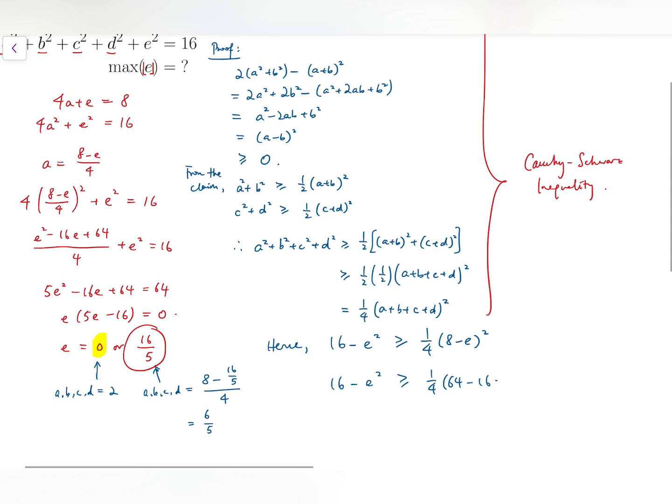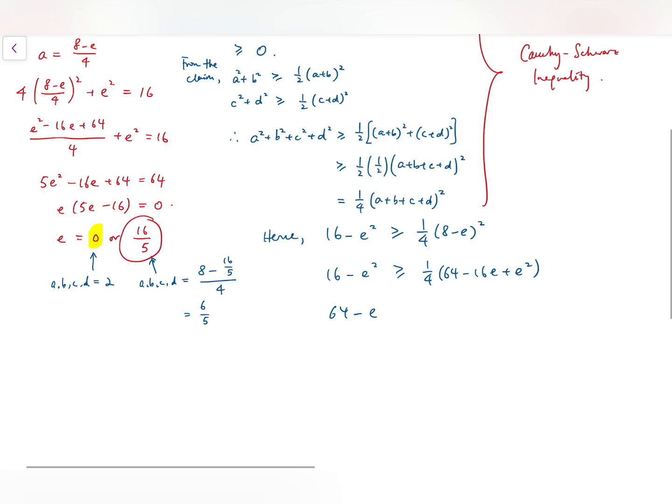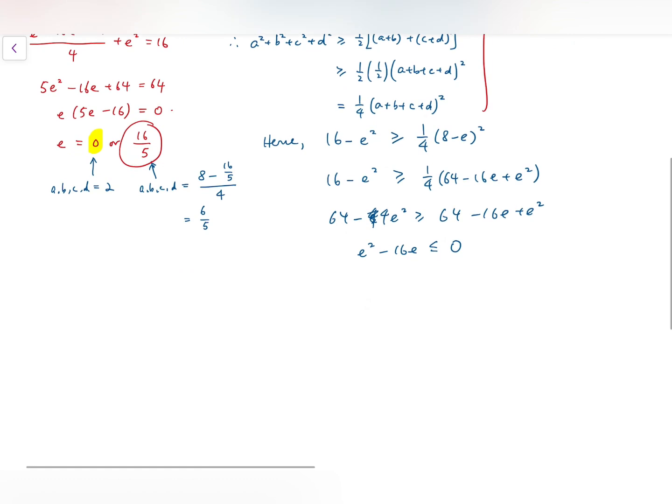So it should be enough for us to get what we want, which is the maximum value of E. And we've returned to the same expression, E squared minus 16E. But this time we have an inequality that's less than or equal to 0.